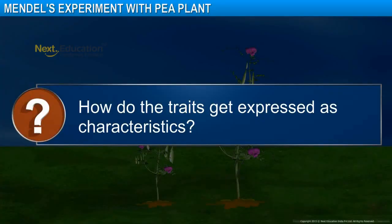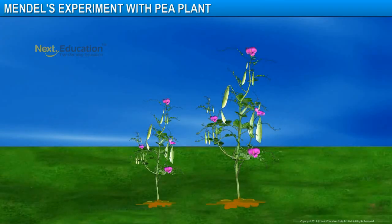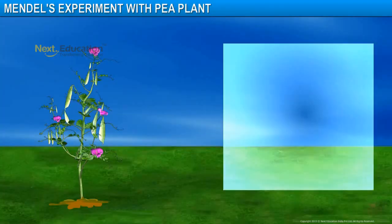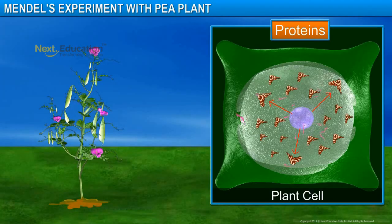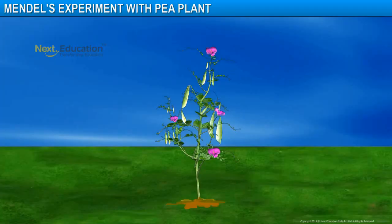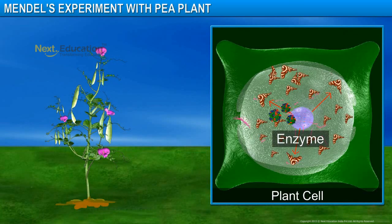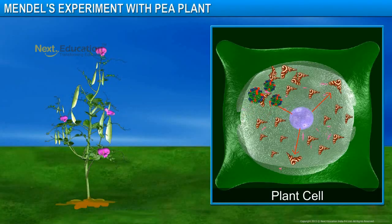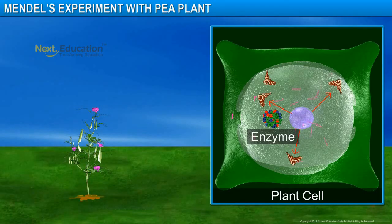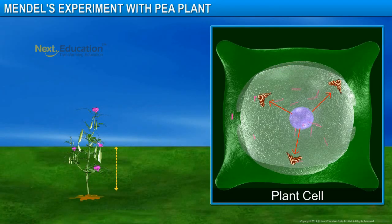How do traits get expressed as characteristics? Cellular DNA is the information source for making proteins in the cell, and proteins control the characteristics in the plant. Consider a plant with tallness as a characteristic. Plants have hormones that trigger growth — assume that an enzyme performs this process. If this enzyme works efficiently, a large quantity of hormone will be made and the plant will be tall. However, if the gene for that enzyme has an alteration that makes the enzyme less efficient, the amount of hormone will be less and the plant will be short.